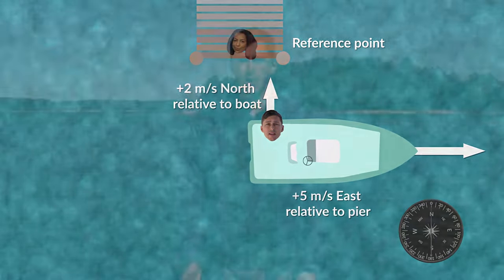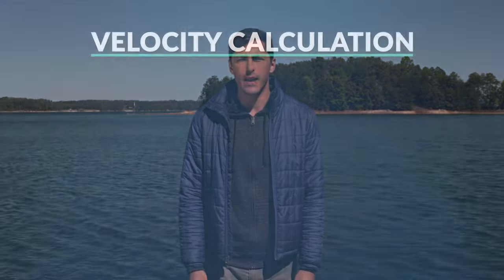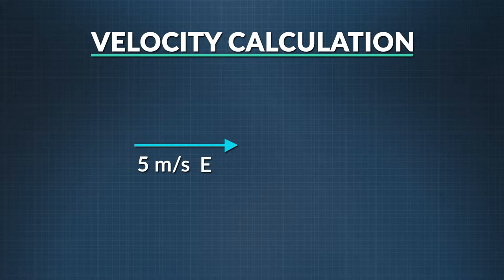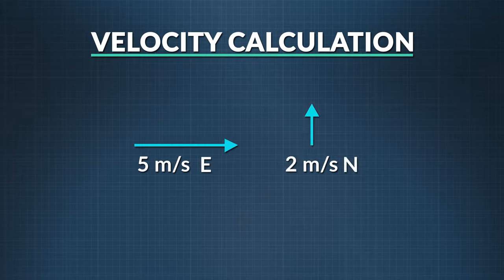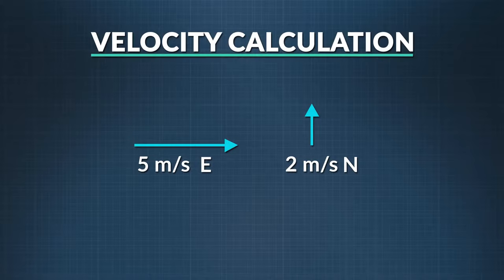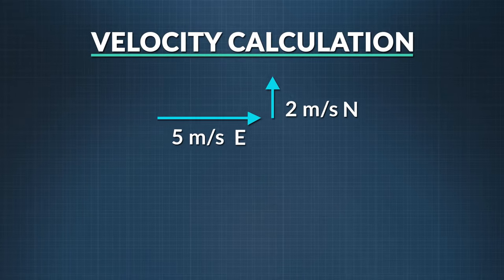When I moved across the deck, what was my velocity relative to the pier? Let's draw it out. The boat's velocity vector is going 5 meters per second east, and my velocity vector is going 2 meters per second north. We'll pick north and east as our positive directions. I just need to know the resultant of these two vectors. To do that, I need to add them together, taking into account that they are pointing in different directions. So I'll use the tip-to-tail method to put them together, and use the Pythagorean theorem to calculate the resultant.